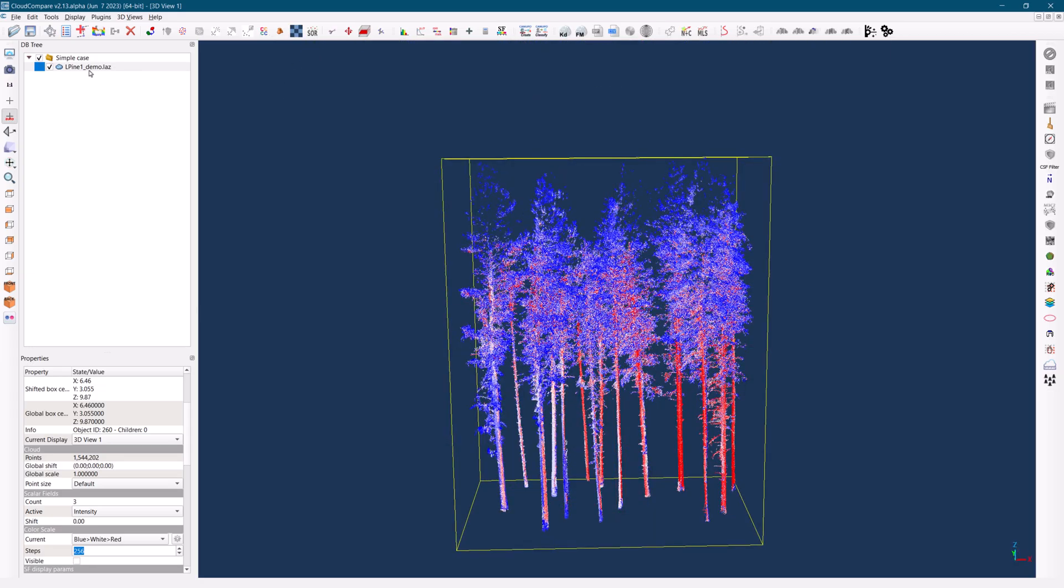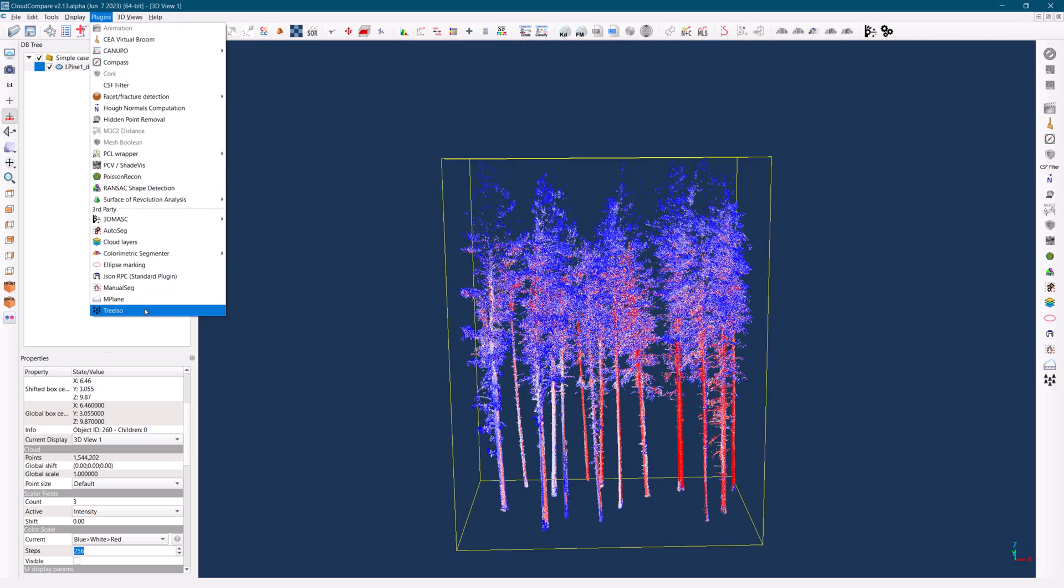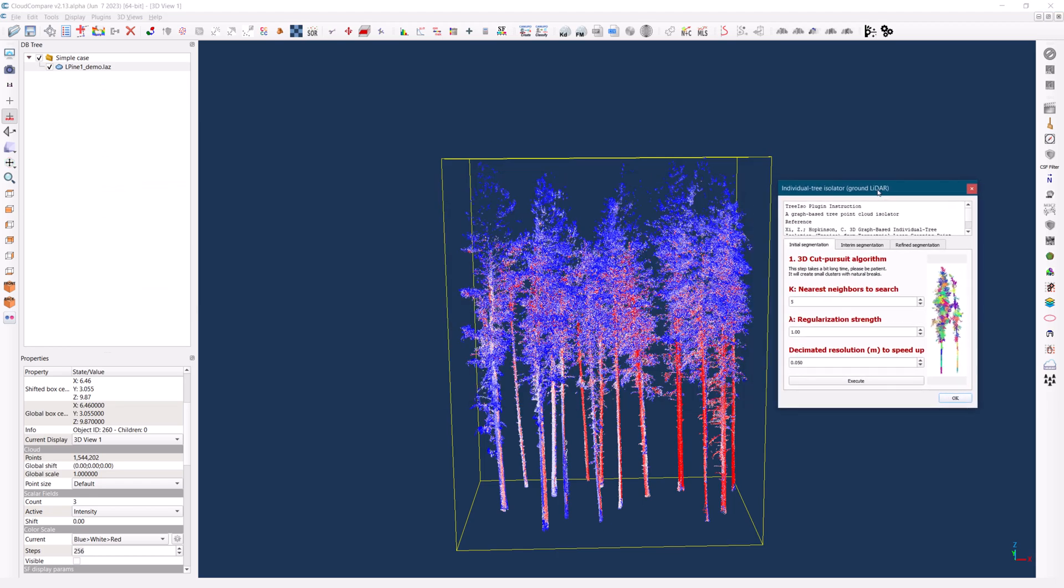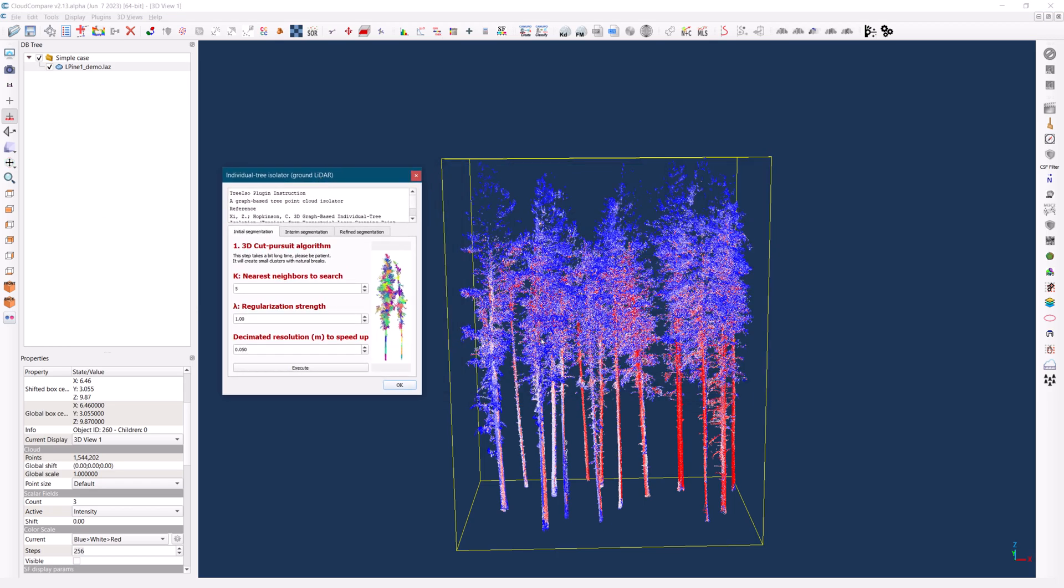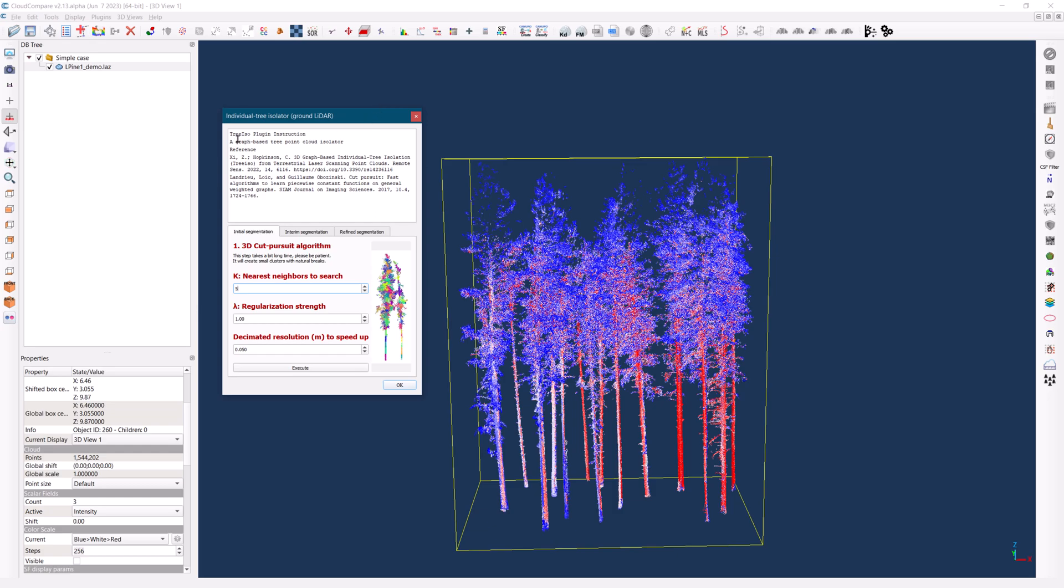To access the tool, go to the plugin menu and select TreeISO. This will open a window where you will also find the original research paper on TreeISO. If you're interested in the underlying theory, I recommend giving it a read. Now, let's proceed with the segmentation process.